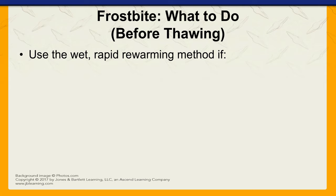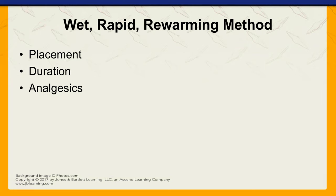Use the wet rapid rewarming method if medical care is more than two hours away, there's no possibility of refreezing, and you have access to warm water, shelter, and a container. If that method isn't possible, use slow rewarming instead. Place the body part in warm water and maintain the temperature, gradually warming over 20 to 40 minutes. Air dry the area — do not rub. For pain, use an analgesic such as an NSAID.